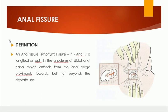The fissure is a longitudinal split in the anoderm of the distal anal canal, and it extends from the anal verge proximally towards, but not beyond, the dentate line. So it is a split only in the anoderm up to the dentate line. Here you can see this is fissure-in-ano and this is the anal opening area.